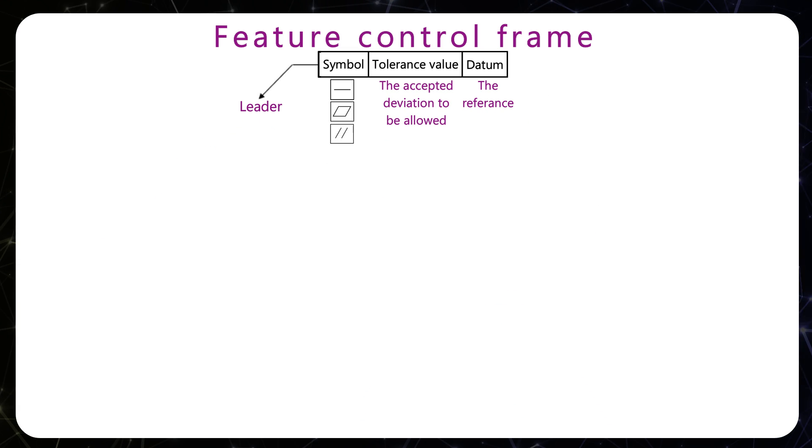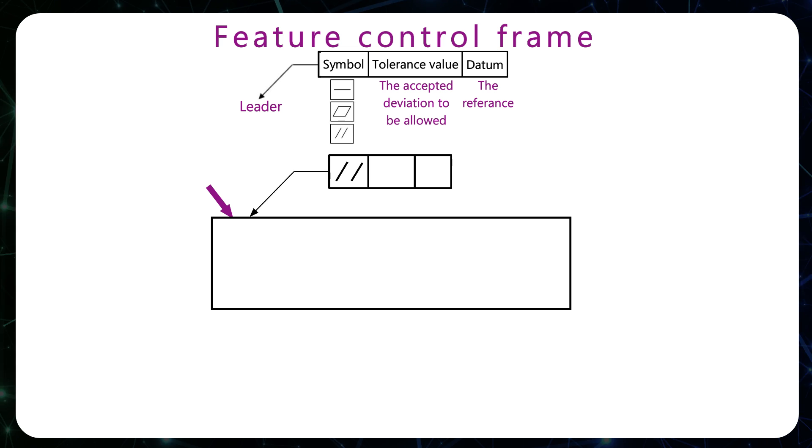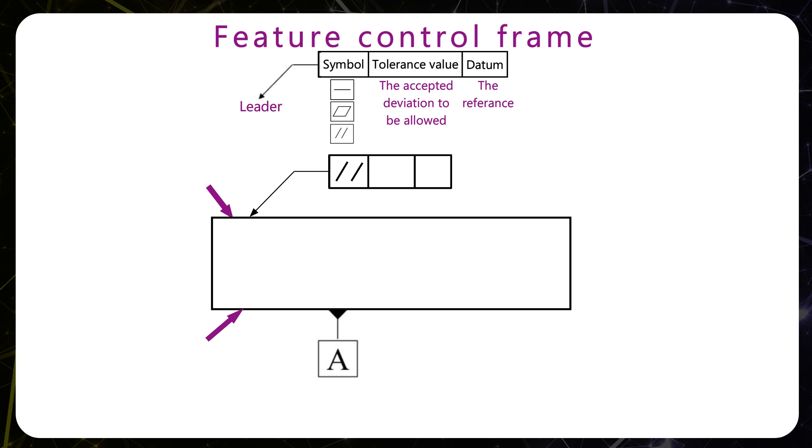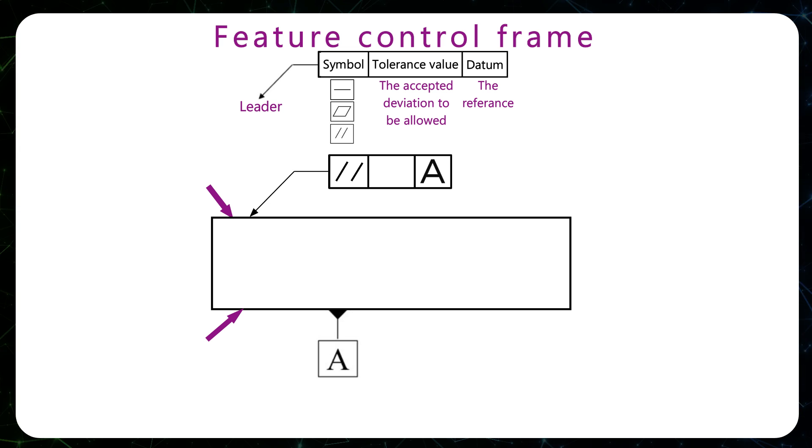Say we want to tolerate this surface to be parallel to that one. Then we have to give it a name. Let's say A. And we put A in the third field. If it was English, for example, it would sound like this. This surface should be parallel to that surface with a value of 0.2.